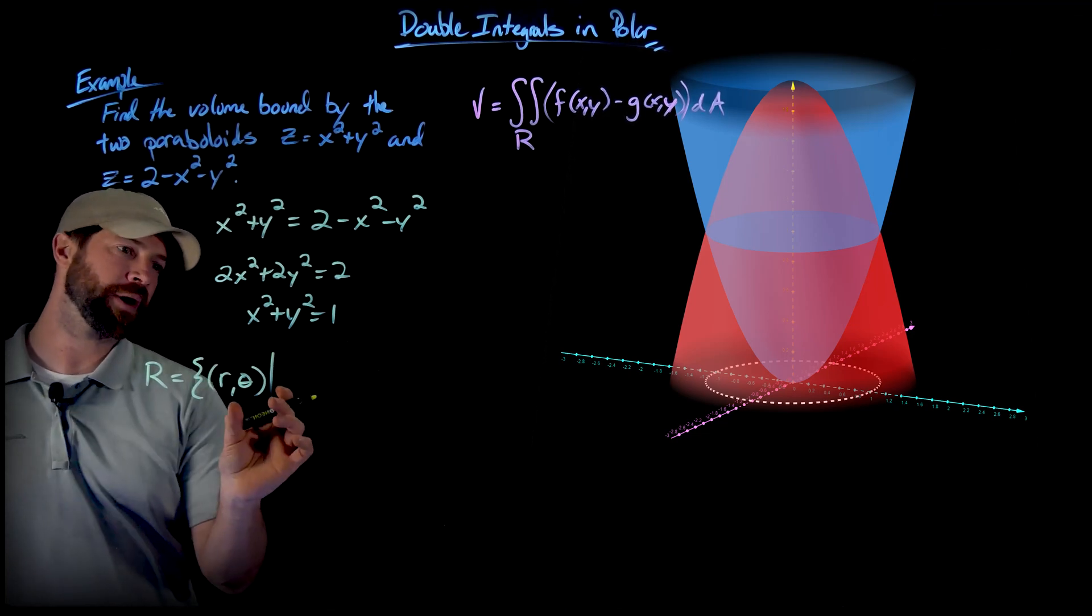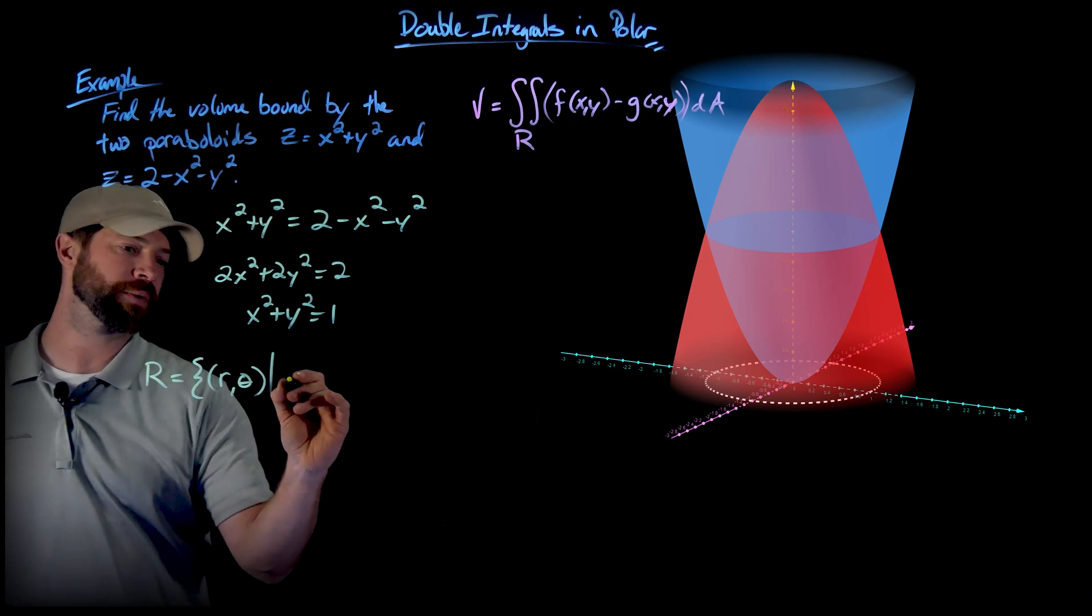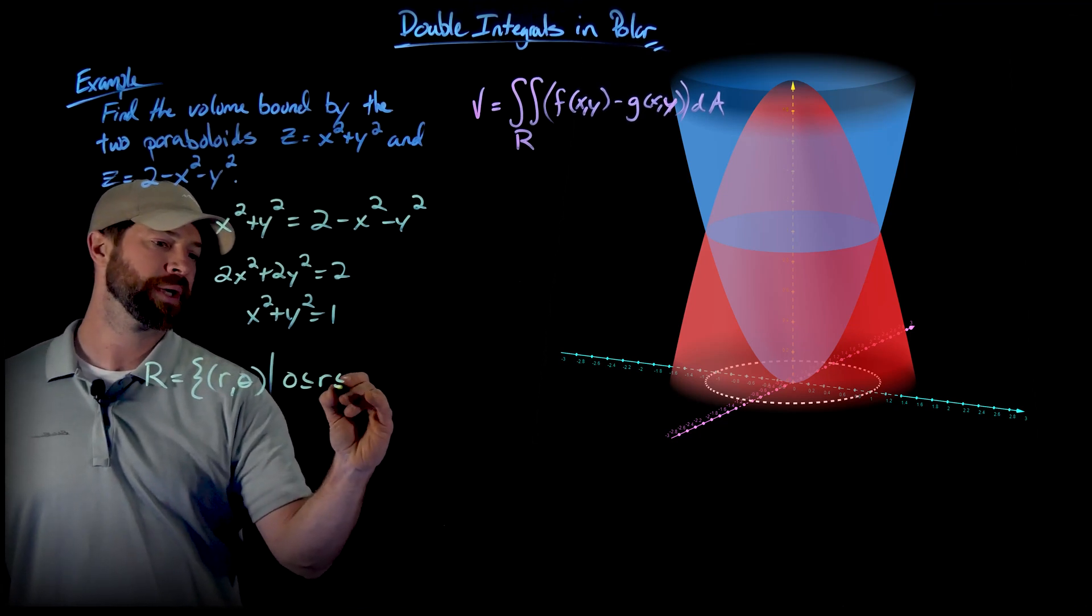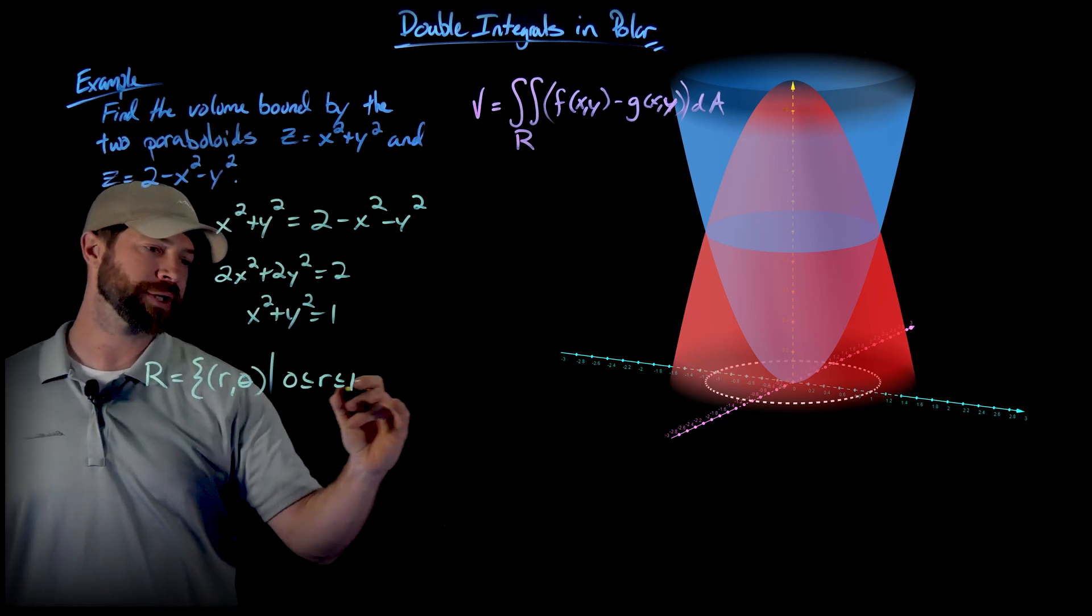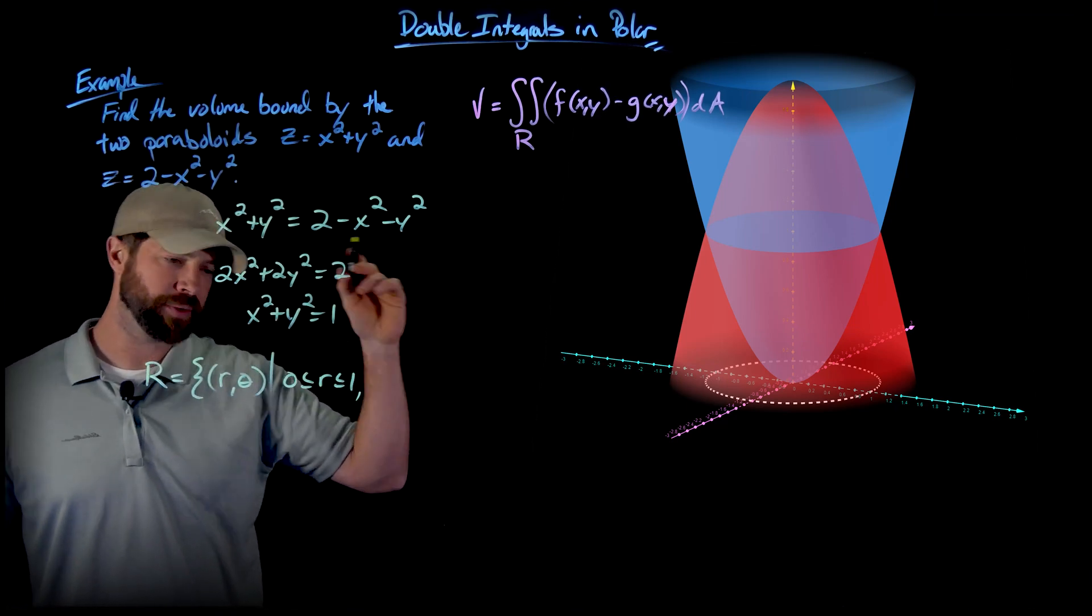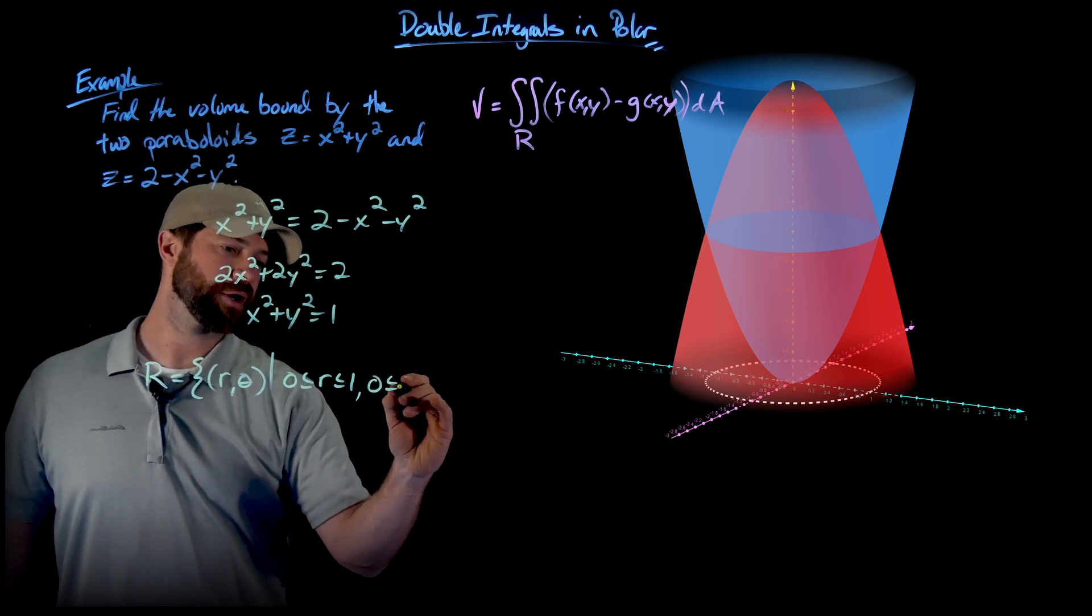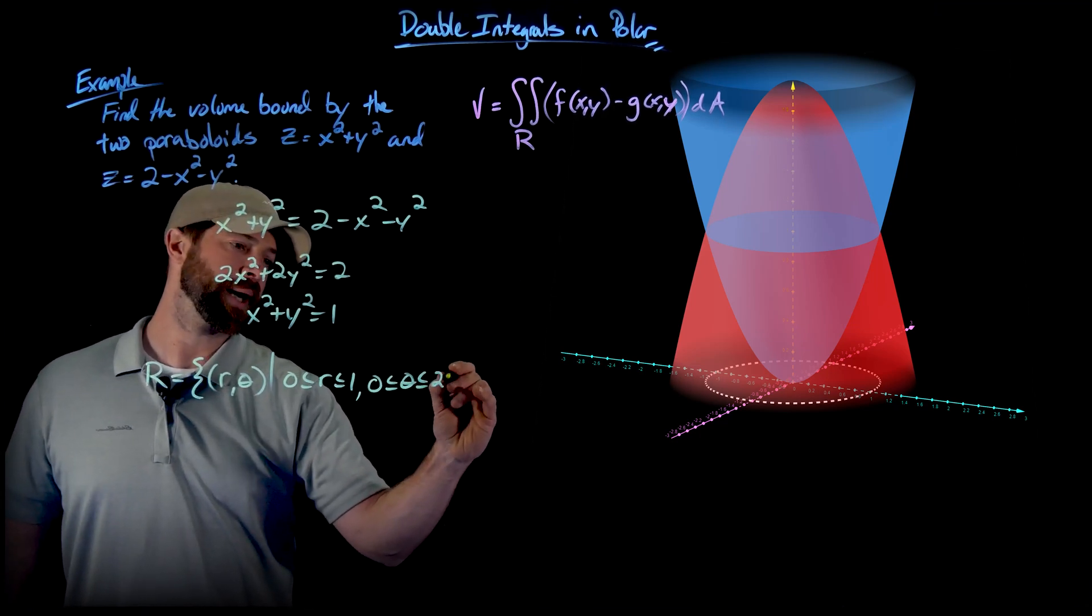And so for r, my r value is going to range from 0 to 1, that will fill in that region as far as that distance from the origin. And then I want to create the full circle so I'm just going to go from 0 to 2 pi.